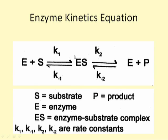One approach uses the original Michaelis-Menten equilibrium assumptions, which assume the ES complex is in equilibrium with free E and free S. The other approach uses the Briggs-Haldane assumptions, where the ES complex is considered to break down significantly to E plus P and not necessarily in equilibrium with E plus S.